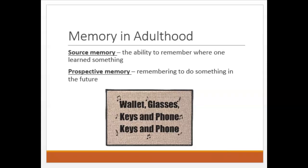The last two types of memory are source memory and prospective memory. Source memory is the ability to remember where one learned something — for example, when my mother tells me an interesting story or fact, and I'm actually the one she got the story from; she'll forget that she heard it from me. And then there's prospective memory, which is remembering to do something in the future, such as remembering to take your medication or remembering to mail a bill. These types of memory decline in older adulthood too, but fortunately there are things you can do to help mitigate it.